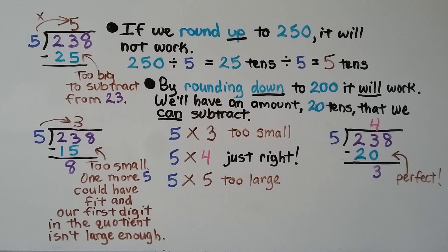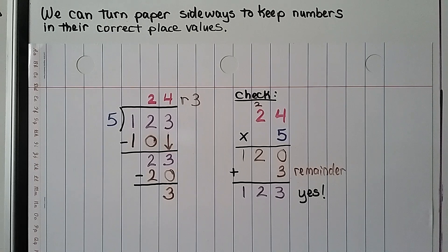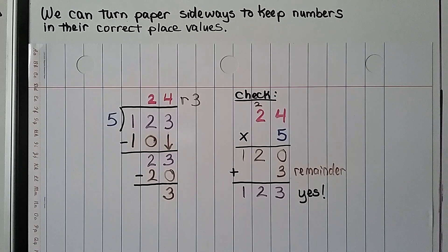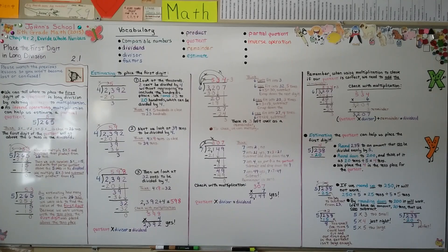If any of this is confusing, our next lesson, 2.2, we're going to be doing this again, so you can stick with me. Remember that we can turn papers sideways to keep numbers in their correct place values. We can use the lines of the paper to keep our numbers in the correct column, even for multiplication. In lesson 2.2, we're going to be dividing by a one-digit divisor and checking with multiplication. Hope to see you there — have a great day!